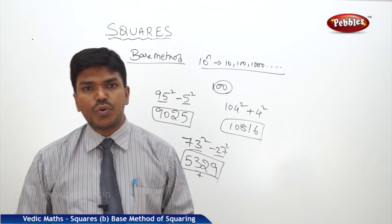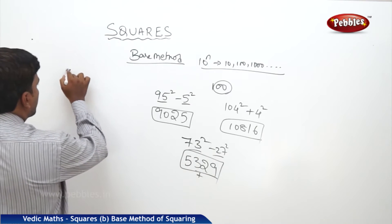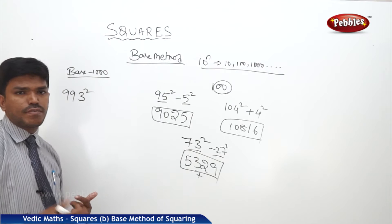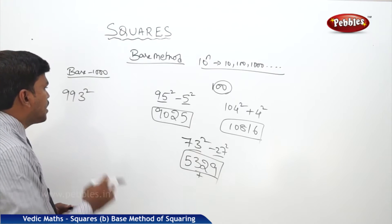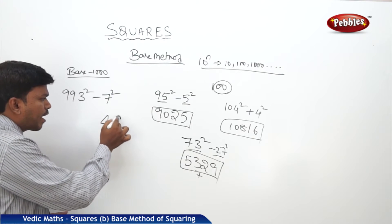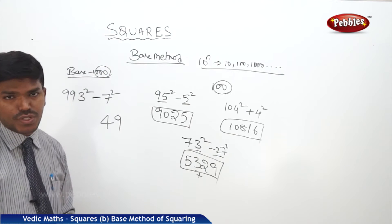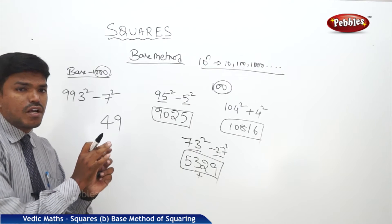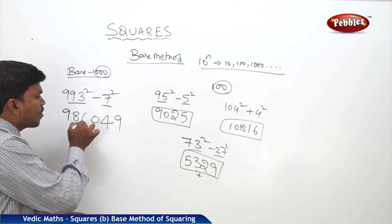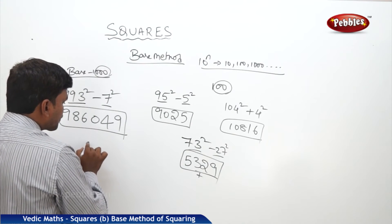Now we extend the same method to base 1000. Suppose I need 993 squared. 993 is closer to 1000, so we take the base as 1000. It is less than the base — by how much? 7. What is 7 squared? 49. But the right side part should consist of 3 digits because there are three zeros in 1000, so write 049. Now 993 minus 7 is 986. So the answer is 986049.